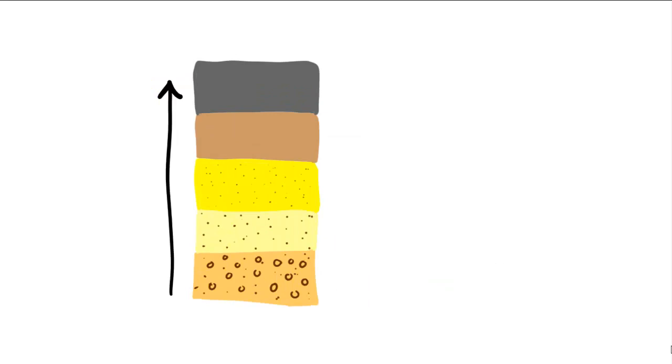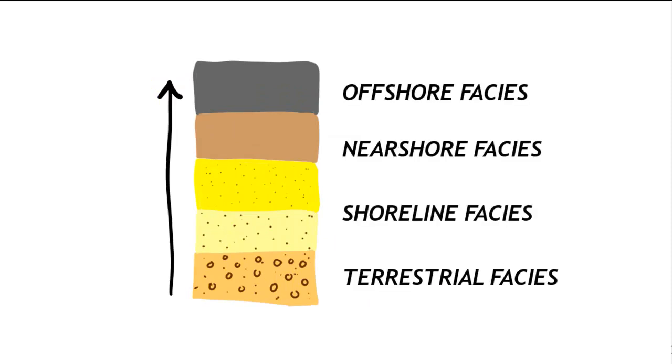So how do we interpret a package of sediments kind of like this? We think about terrestrial facies that are coarse down at the bottom, and then shoreline facies that are finer towards the middle, and then marine facies near shore and offshore up towards the top.